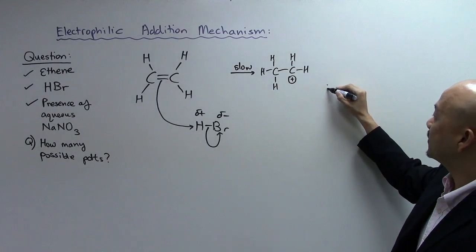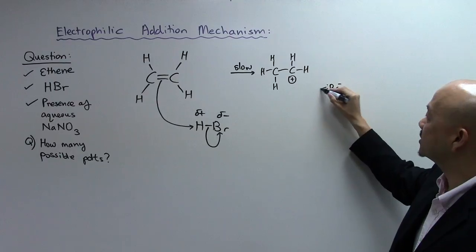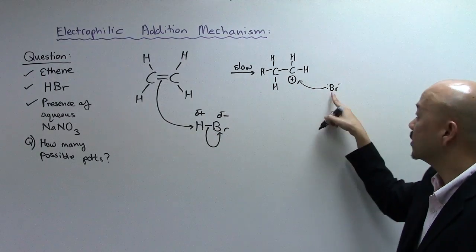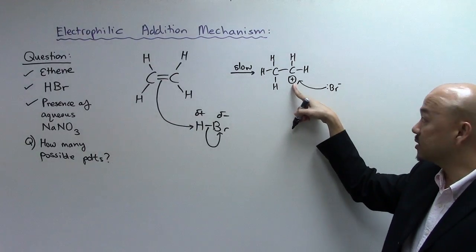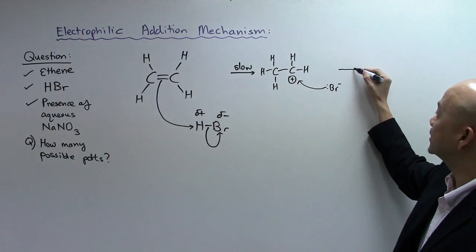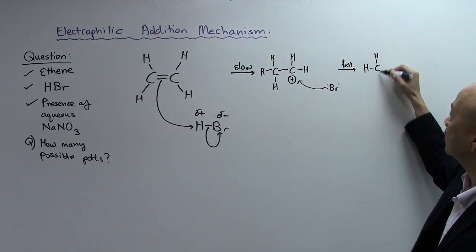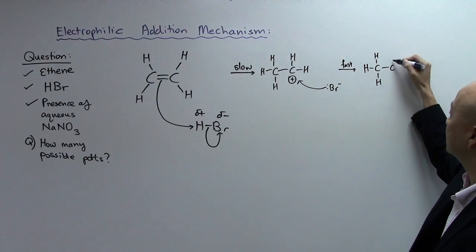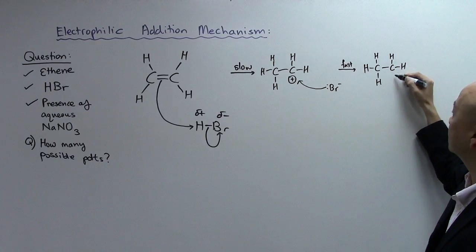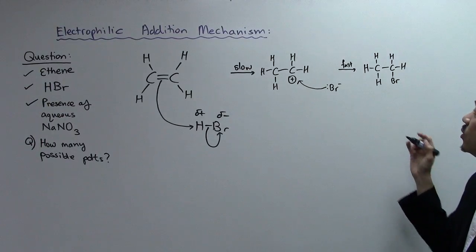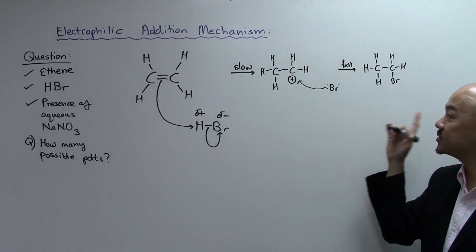And then your Br- that is present due to a heterolytic fission in step one will attack the electron deficient carbon here. And this will be the second step known as the fast step. And you'll get your first product which is here, your bromoethane. So you have one product.